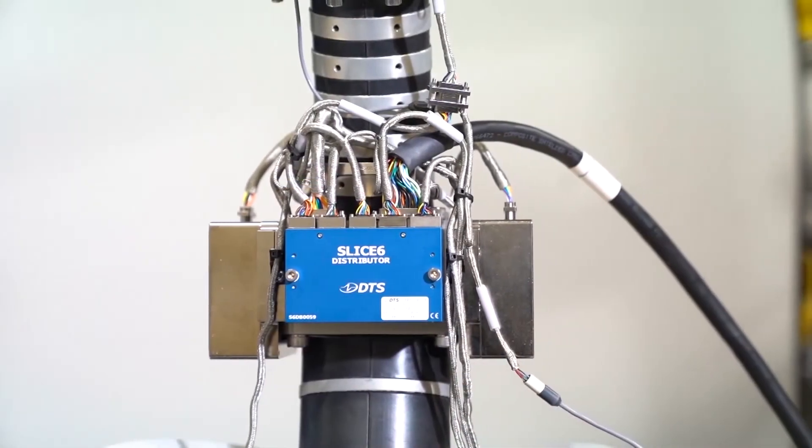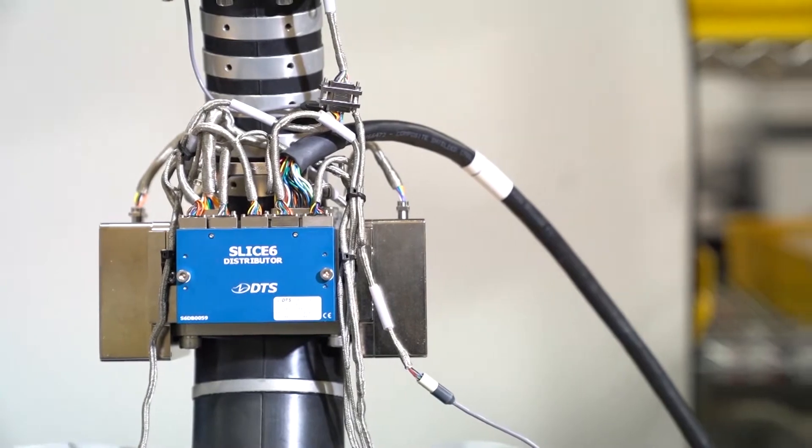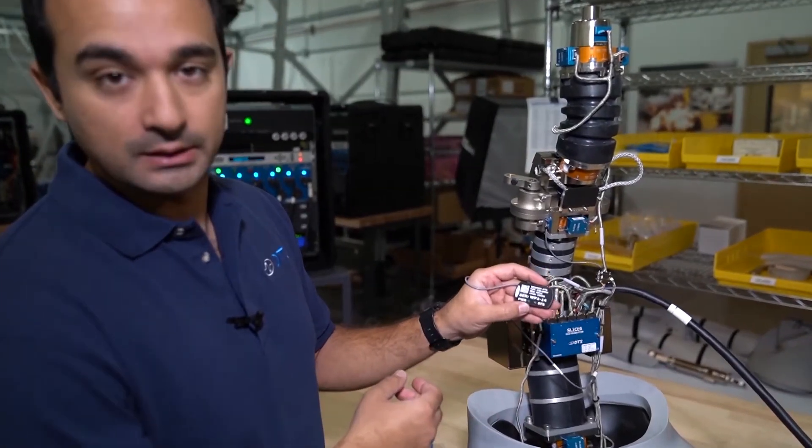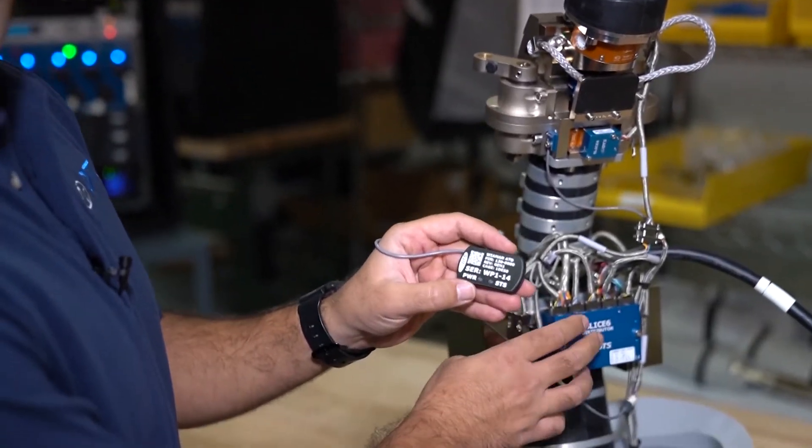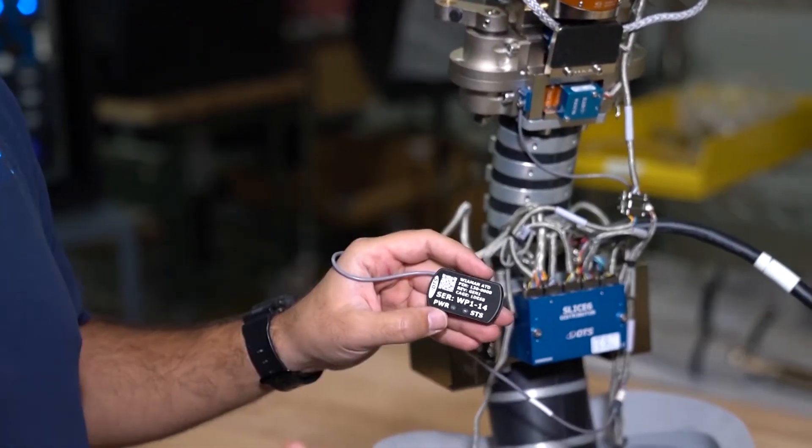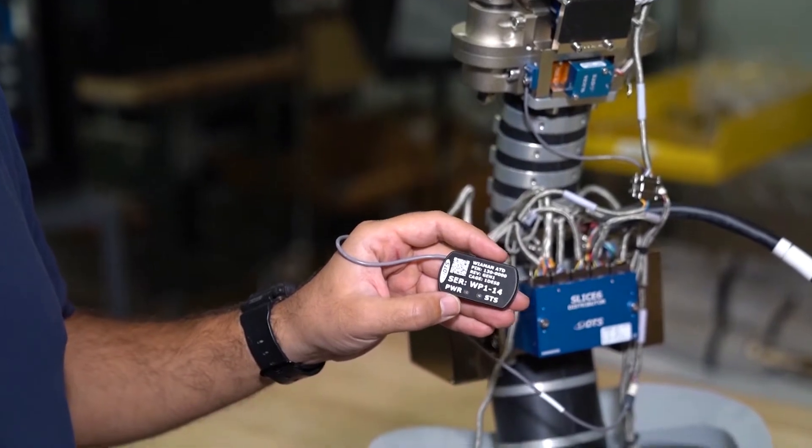The auxiliary port allows us to plug in a few different items. The first item is the external LED indicator. This replicates the LEDs that are on the Slice 6 distributor so you can easily see them outside the dummy and have access to them during the test.